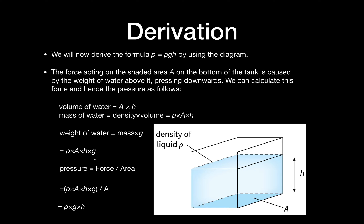Pressure is force over area. The force is the weight of the water: ρ × A × h × g. Dividing by area A, the two A's cancel, giving pressure equals ρgh. If I went too fast, go back and revisit. This derivation comes up very often, so you should know it like the back of your hand.